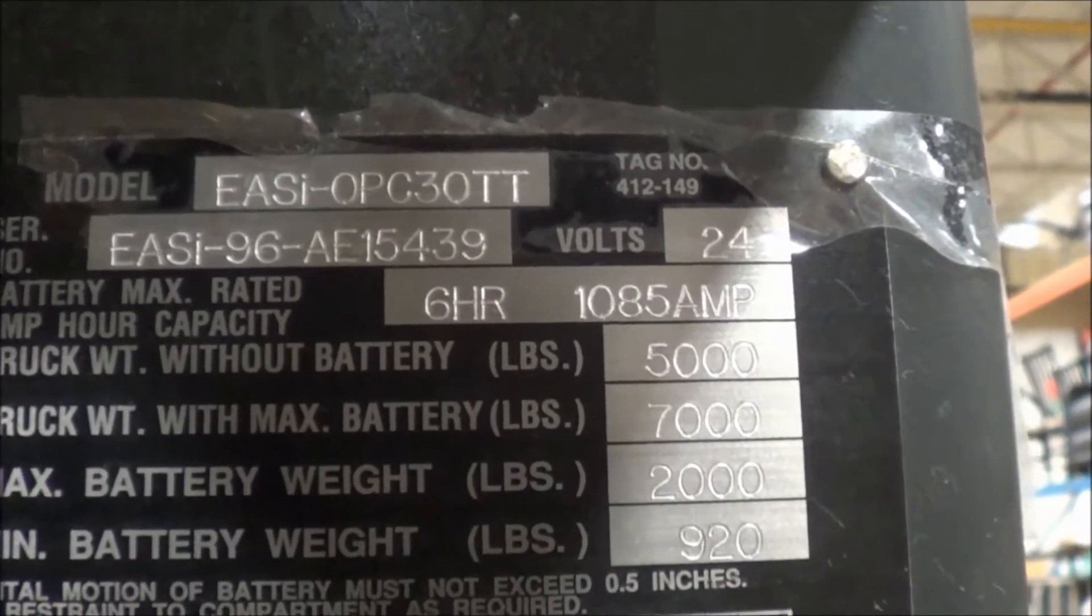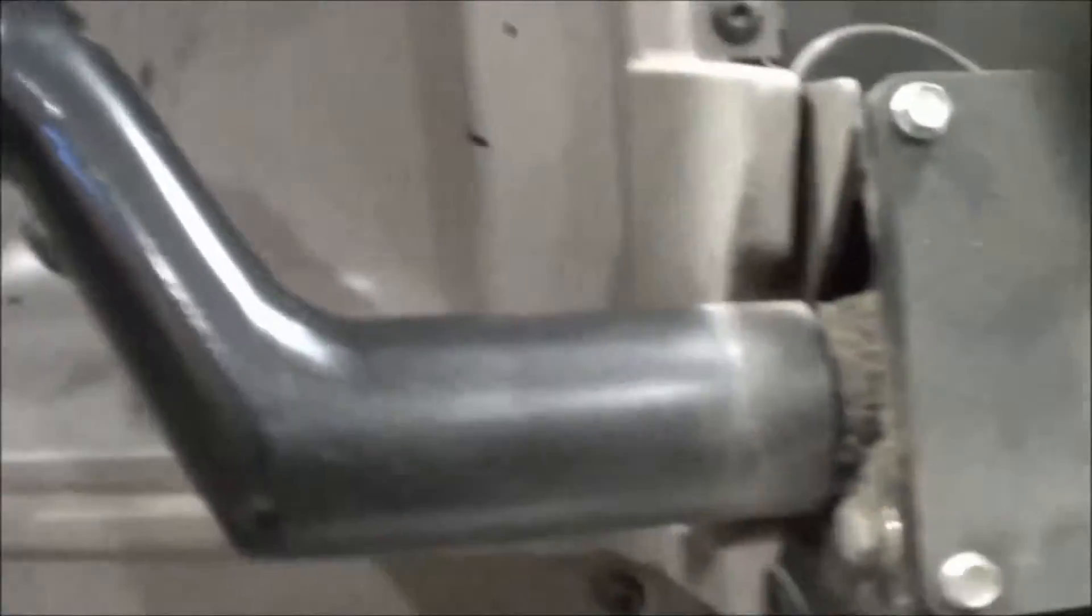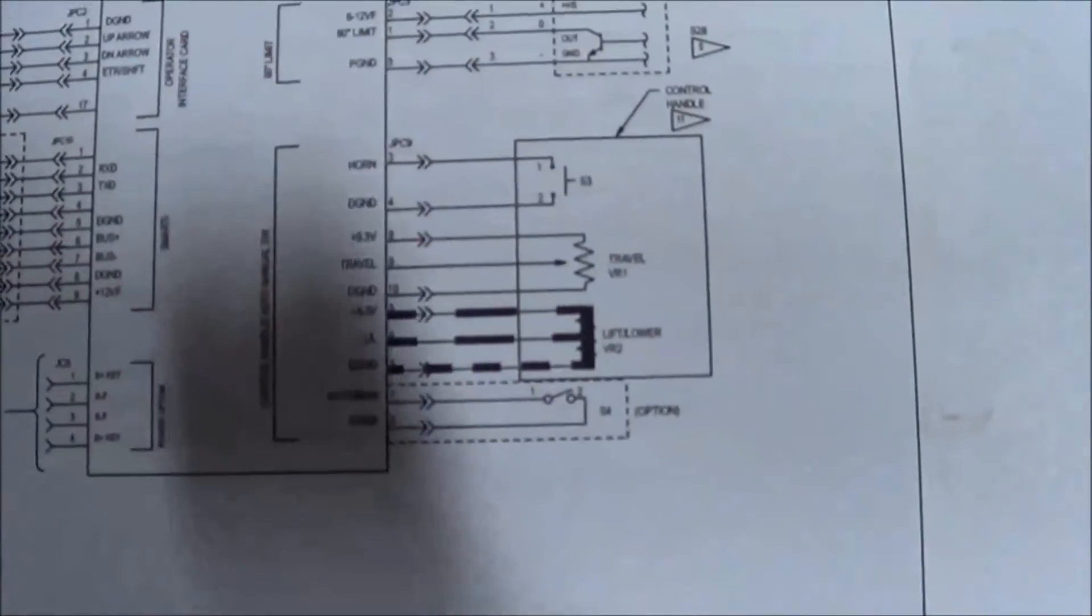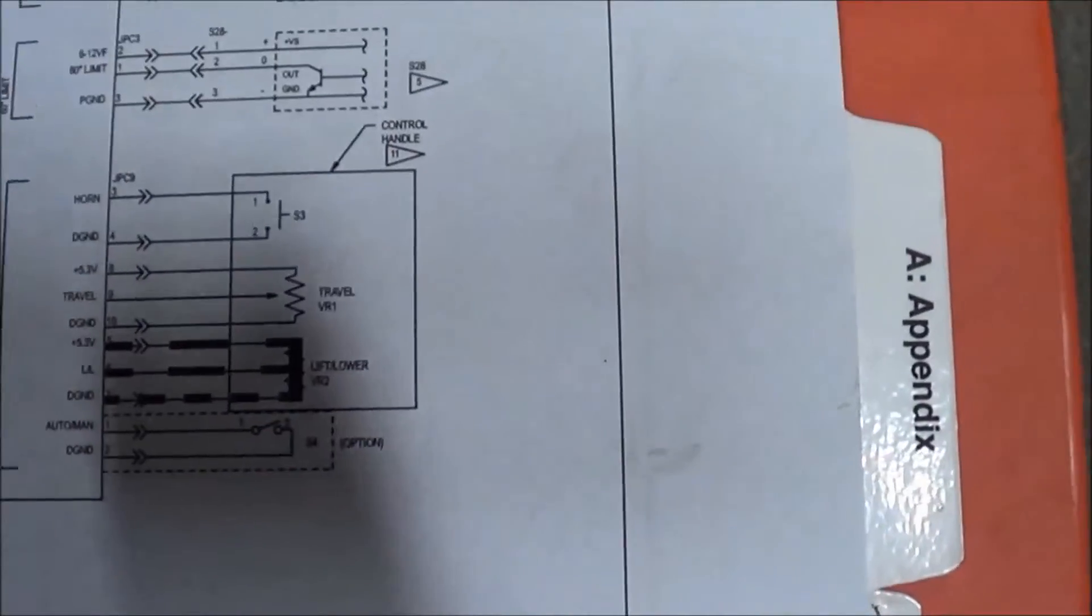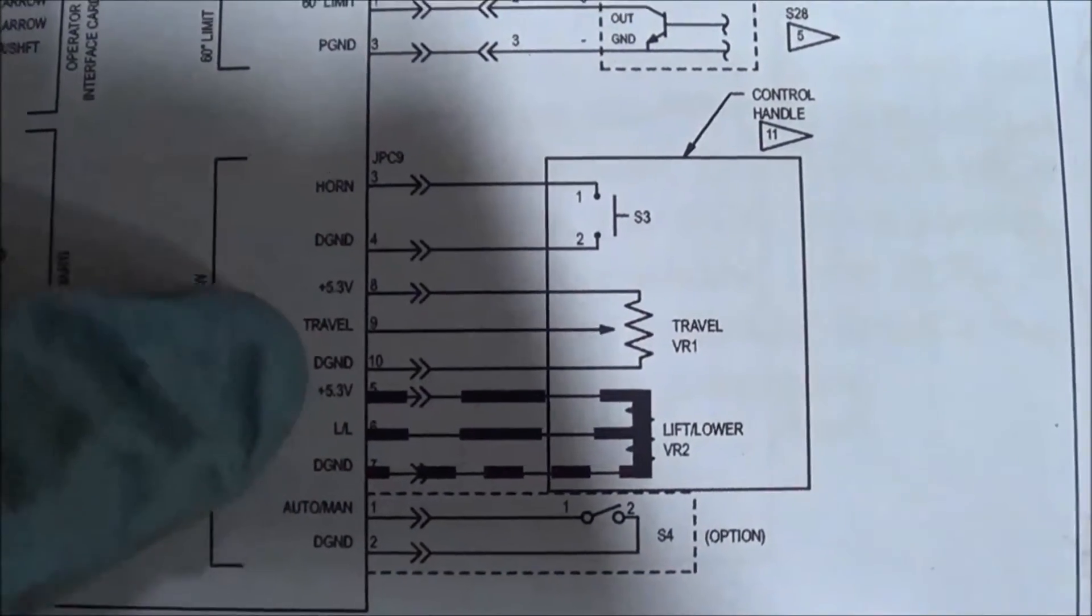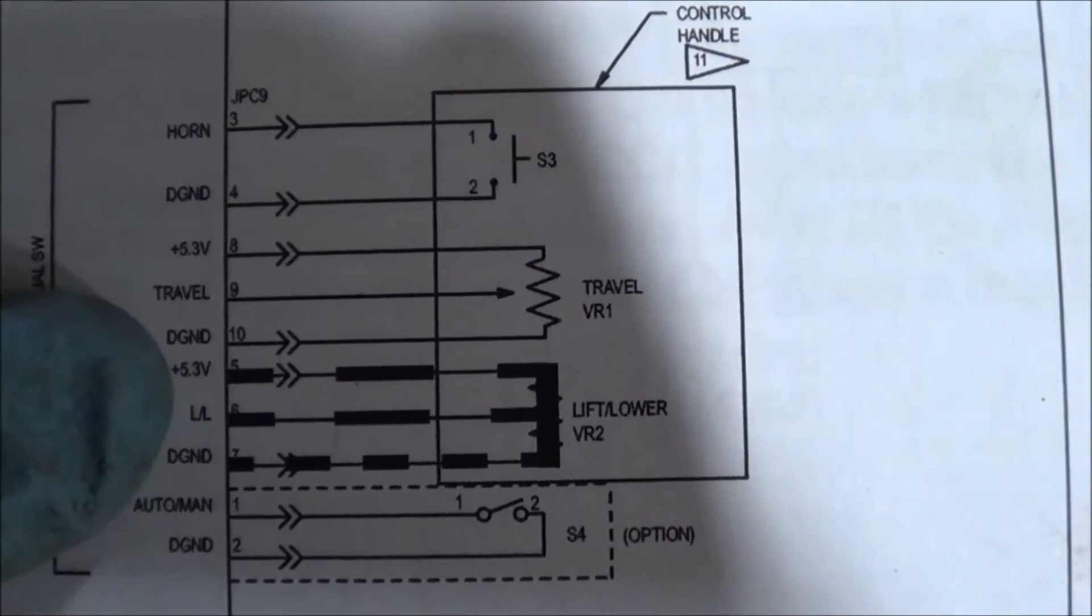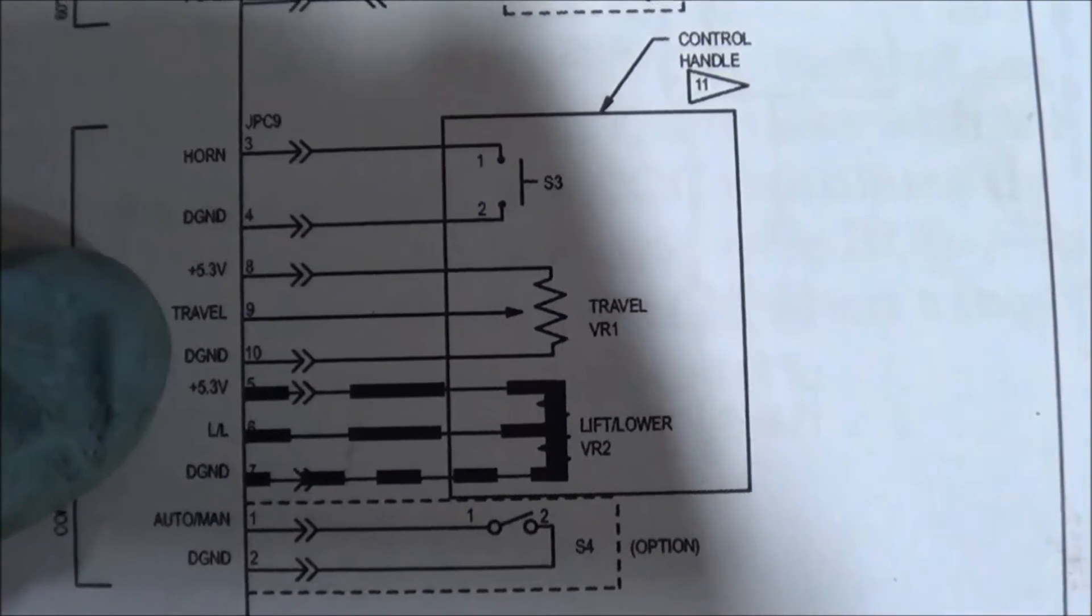Working on an ECOPC 30 Raymond order picker with a complaint of intermittent code 80. Looking at the diagram, code 80 would be an abnormal sudden signal coming from the travel pot. The travel pot is connected to ground on pin 10, and signal is on pin 9.